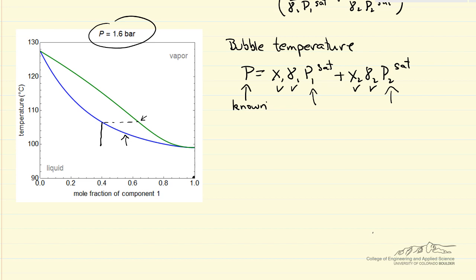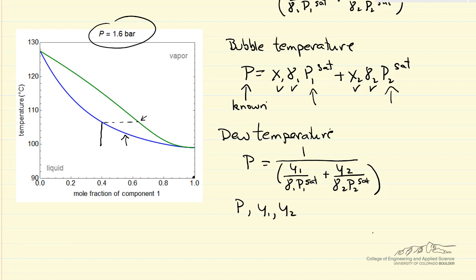That's the bubble temperature. Now the dew temperature uses the same equation we had before. In this case, we know the pressure, we know y1, we know y2. We don't know the gammas because we don't know the x values, and gammas definitely depend on the x values.